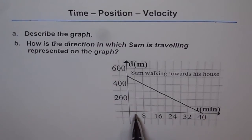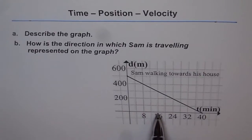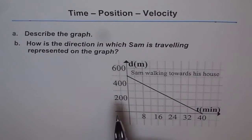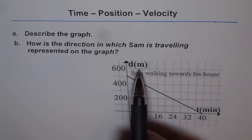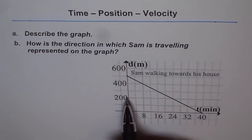Each division on the horizontal axis is 4 minutes — so 4, 8, 12, 16 and so on. On the vertical axis we have shown distance, and distance is in meters. Each division is 100 meters.